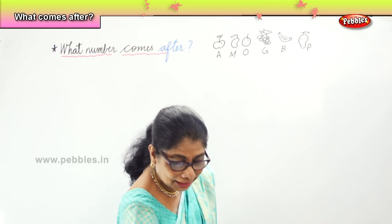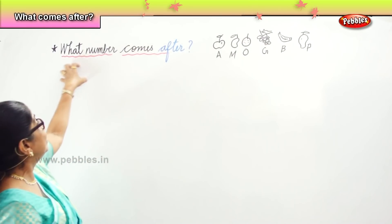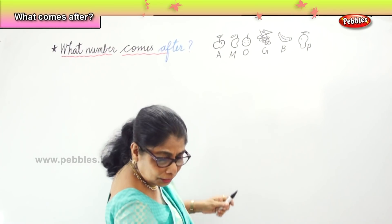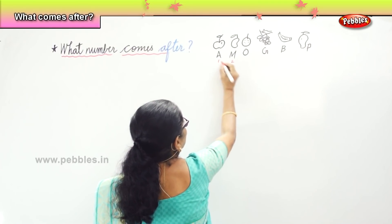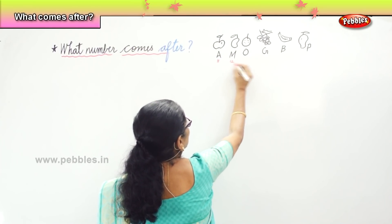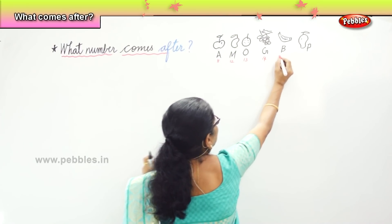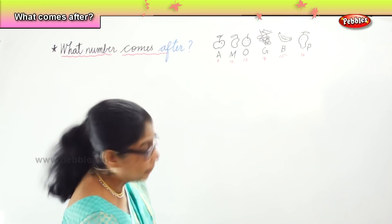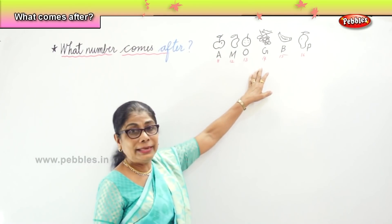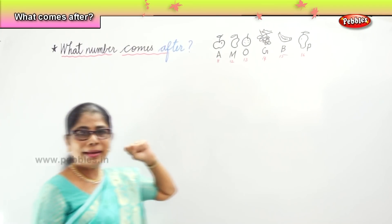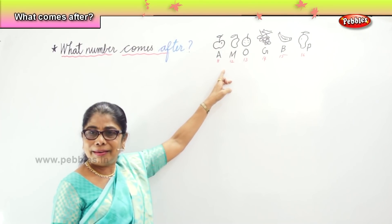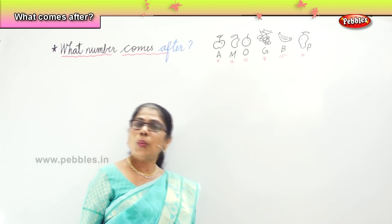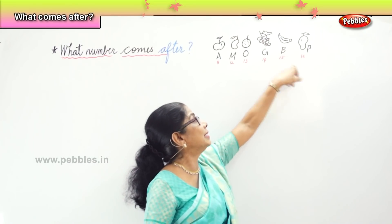Let's do some exercises to remember what number comes after. Here, if I write eleven, twelve, thirteen, fourteen, fifteen, sixteen — now I am asking you: what number comes after fourteen? Fifteen. What number comes after eleven? Twelve. What number comes after thirteen? Fourteen. What number comes after fifteen? Sixteen. Simple.